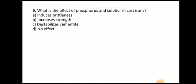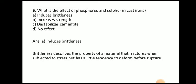Next question: What is the effect of phosphorus and sulfur in cast iron? The answer is it induces brittleness. Brittleness describes the property of a material that fractures when subjected to stress but has little tendency to deform before rupture.